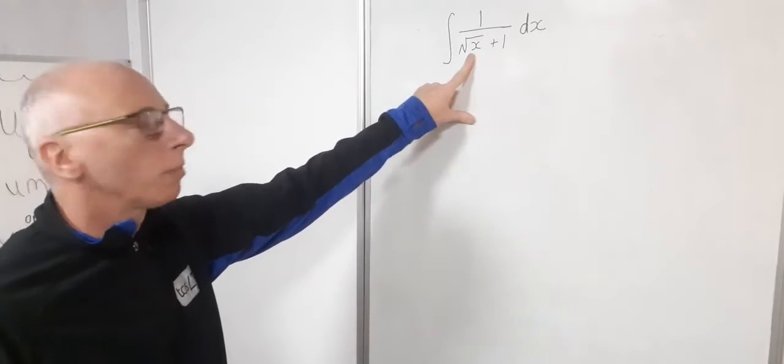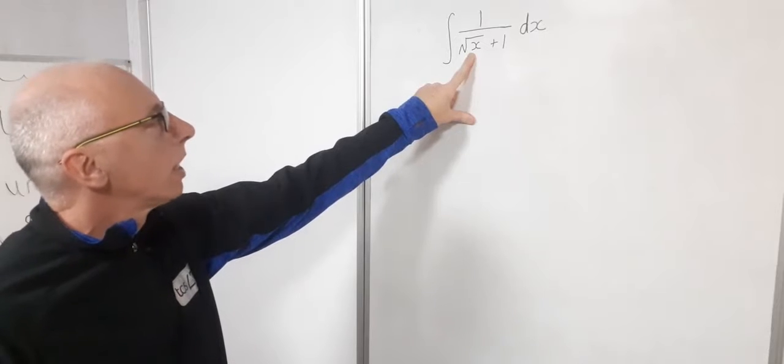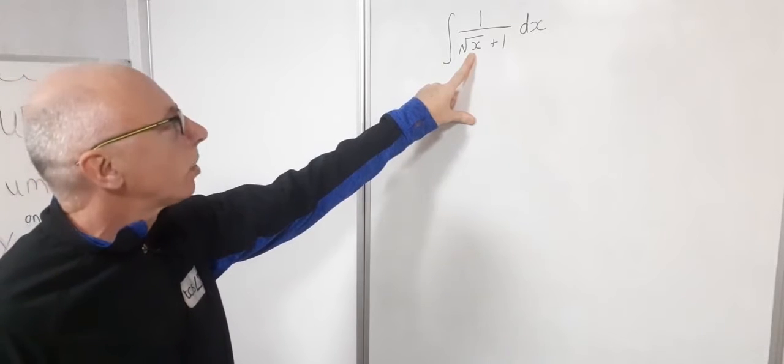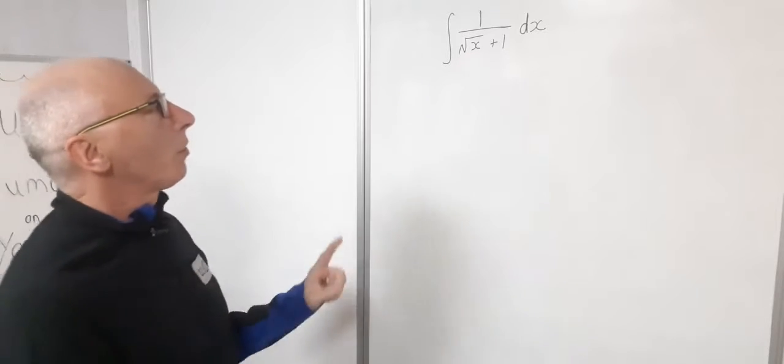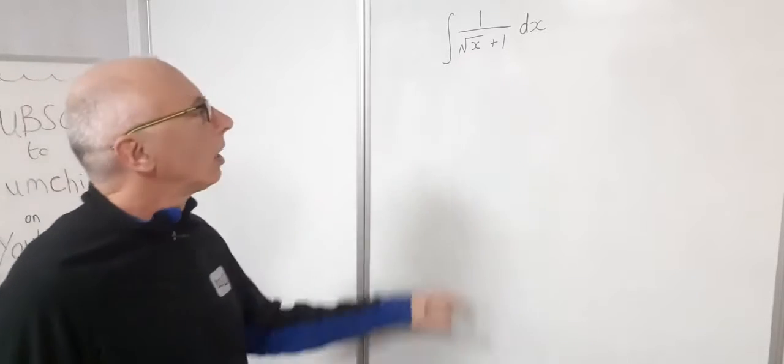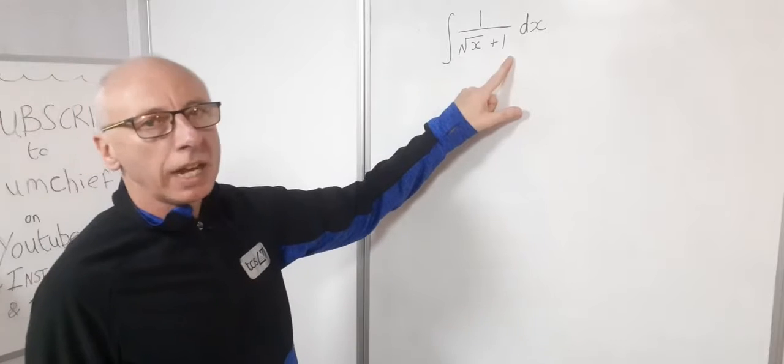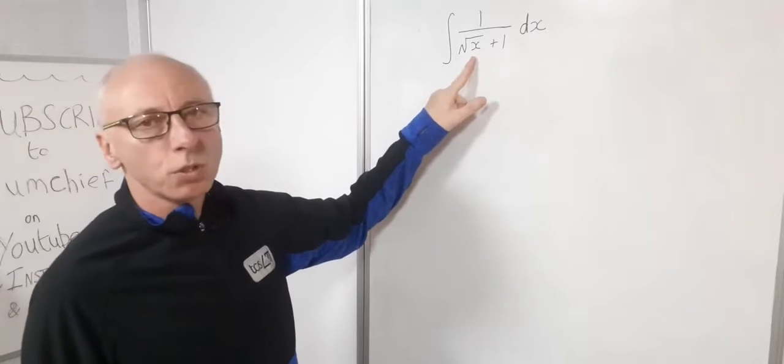Now a trig substitution is probably not going to work with this square root term, so we're looking likely that it's going to be a u substitution. So we've got a few choices for what our u could be, we could put the whole term as a u or we could just do the square root of x.